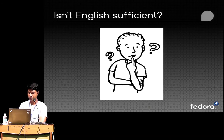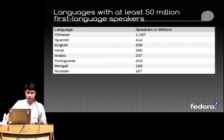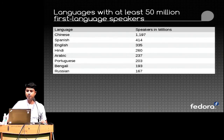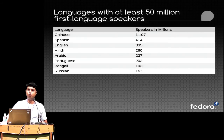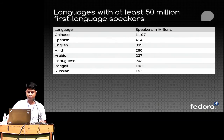If you see this chart, it shows first language speakers with at least 50 million worldwide. You'll find that English comes in at third place. Hindi is just below English. One can argue that English might have more speakers, and yes, English does have more speakers — but that is because many people have English as their second language. Note that point.